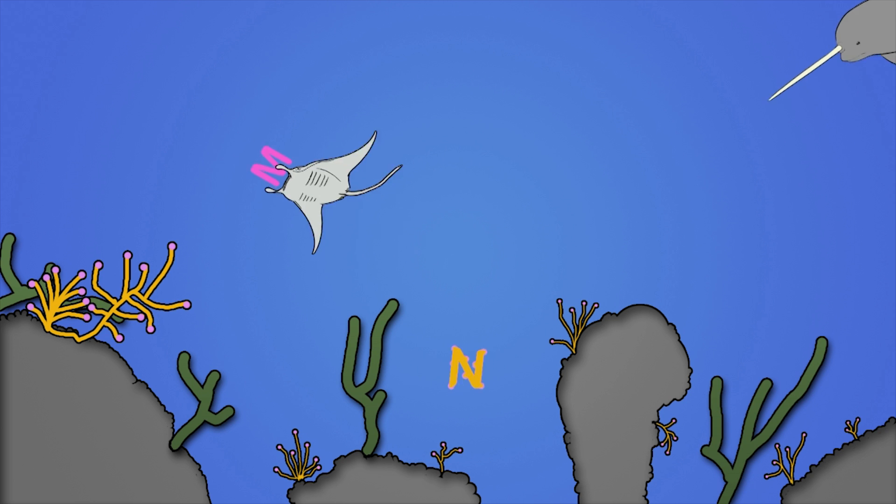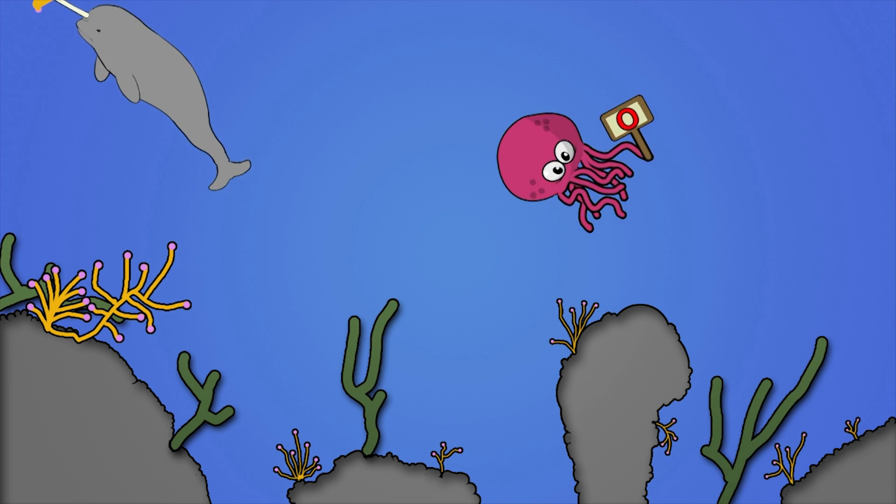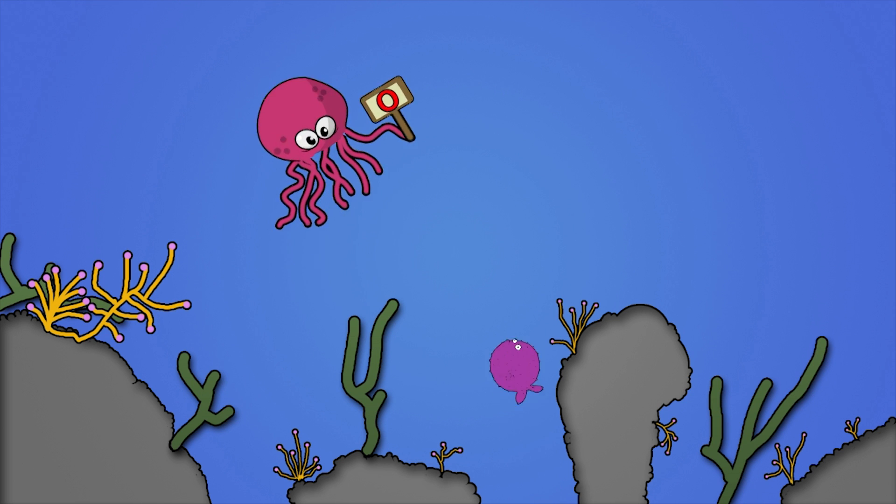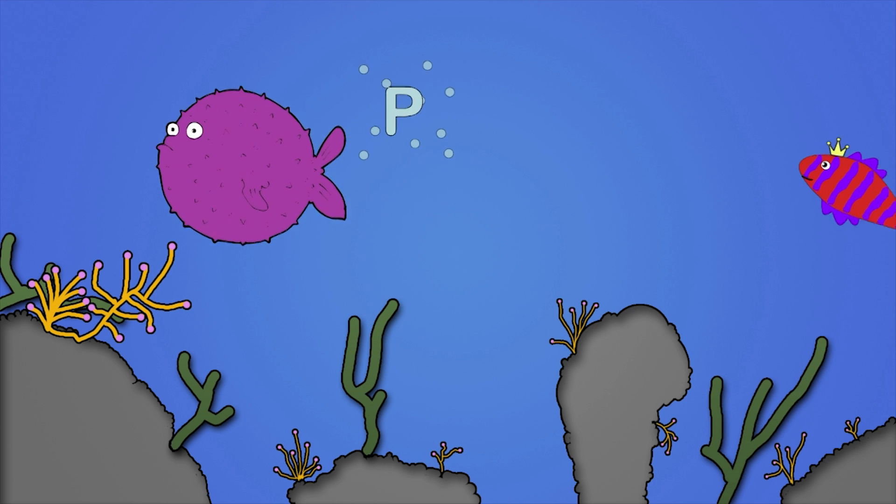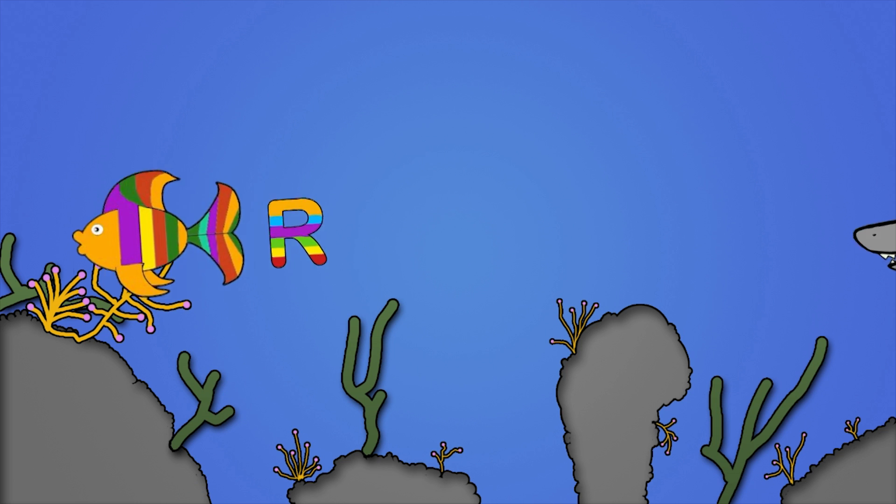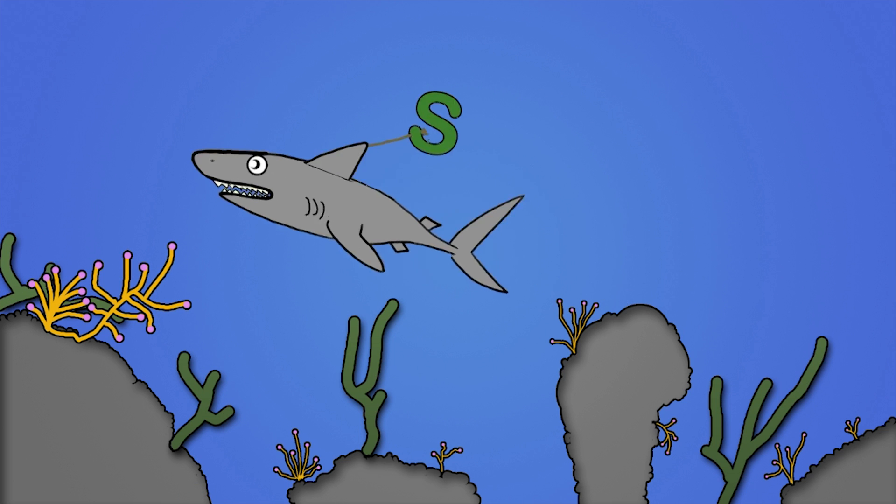M is for Manta Ray. N is for Narwhal. O is for Octopus. P is for Pufferfish. Q is for Queenfish. R is for Rainbowfish. S is for Shark.